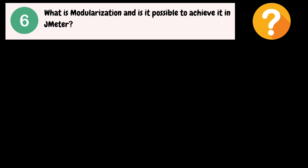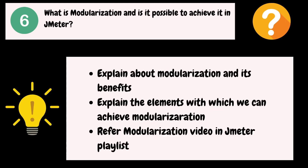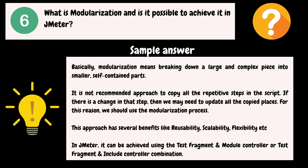What is modularization and is it possible to achieve it in JMeter? You can break this question into different parts: first explain the concept of modularization, second explain one or two benefits, and finally explain the JMeter elements with which we can achieve modularization. Here is the sample answer: basically, modularization means breaking down a large and complex piece into smaller, self-contained parts. It is not a recommended approach to copy all the repetitive steps in the script, because if there is a change in that step, you may need to update all the copied places. For this reason, we should use the modularization process.